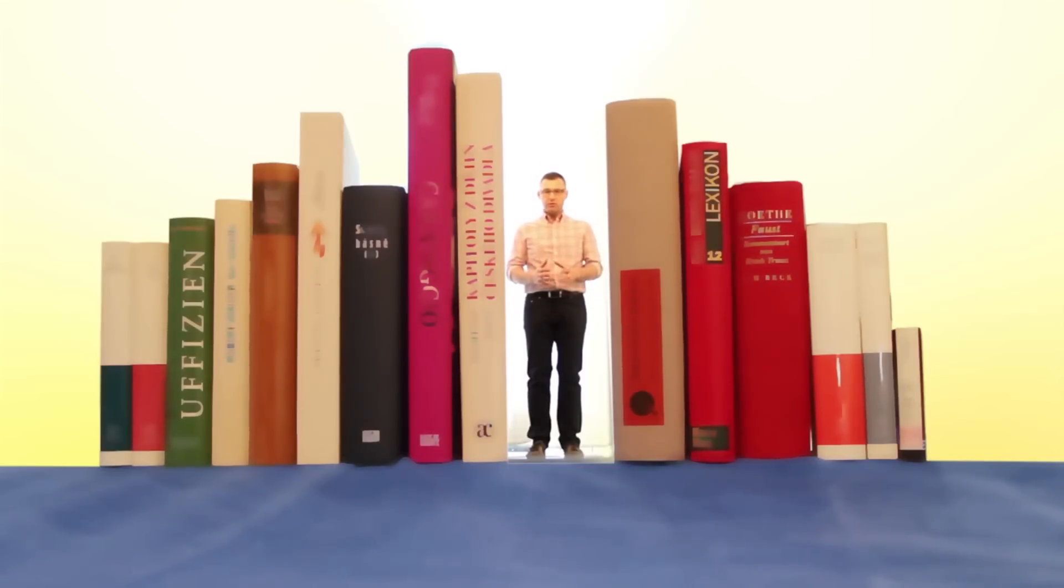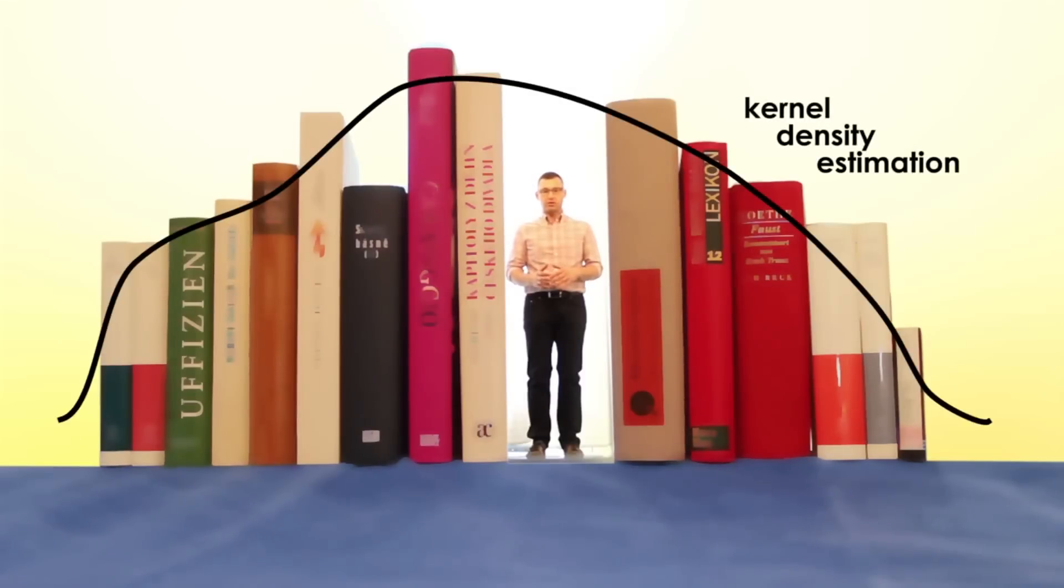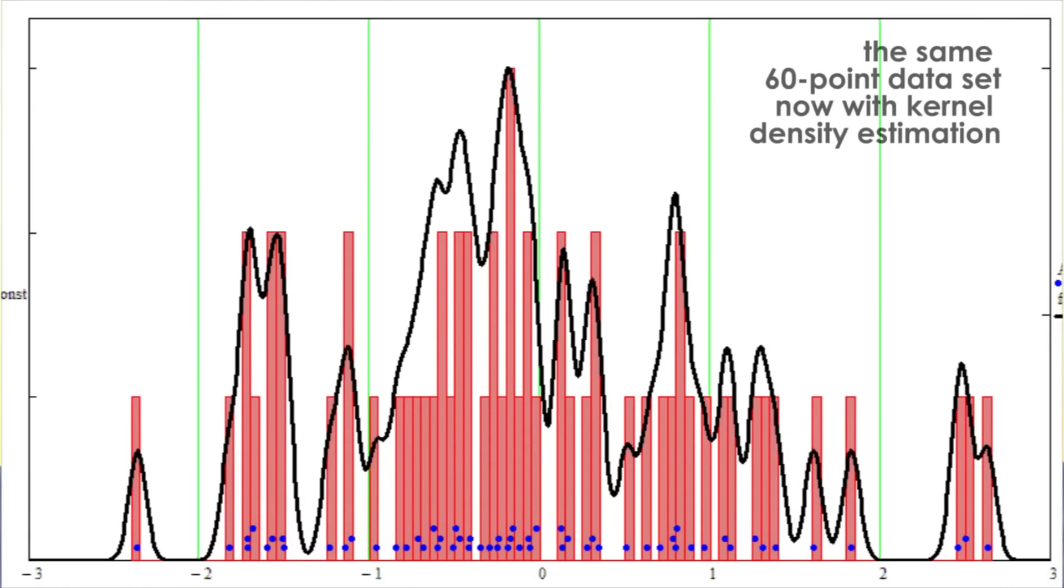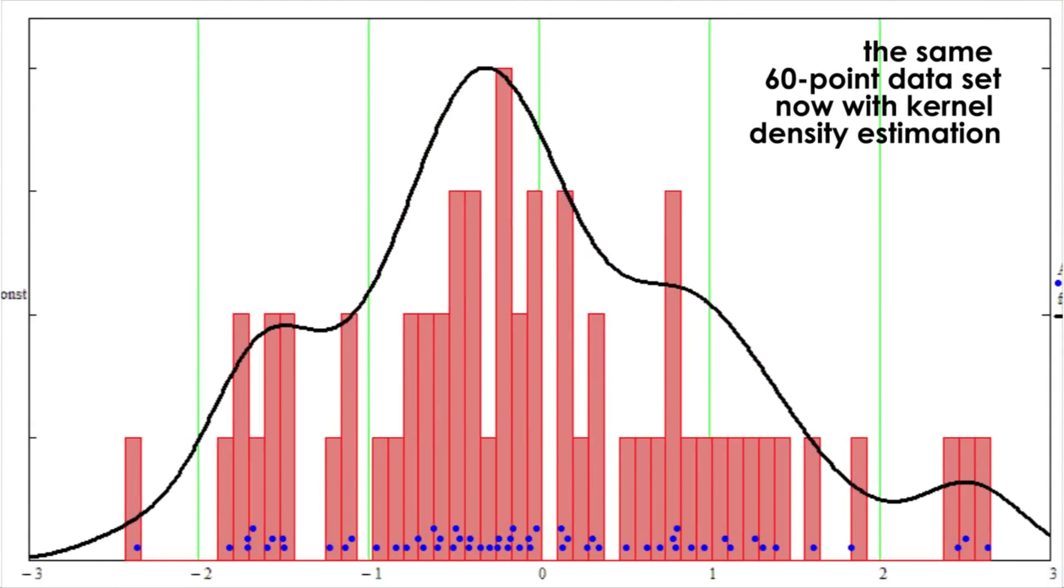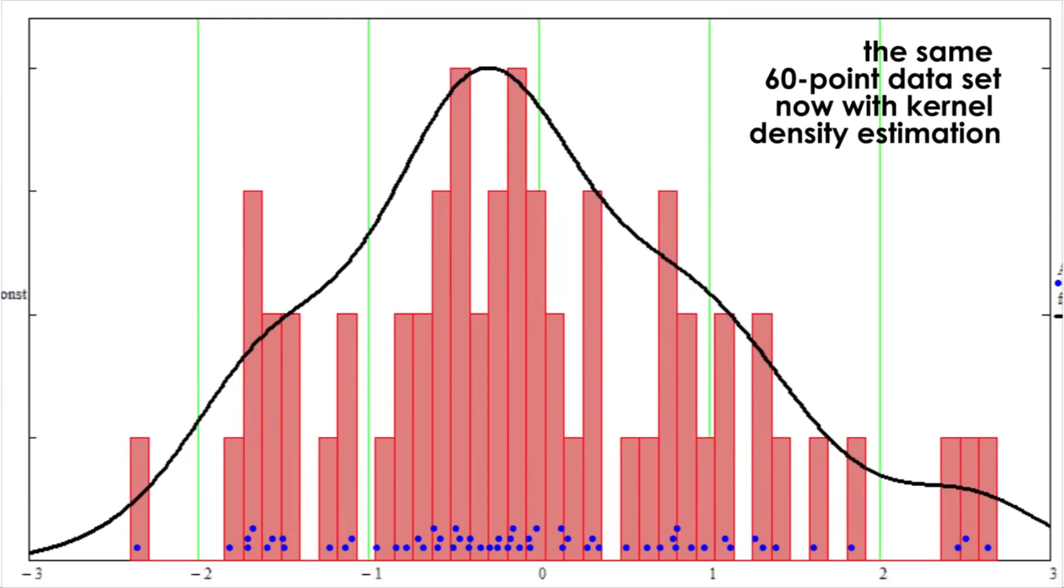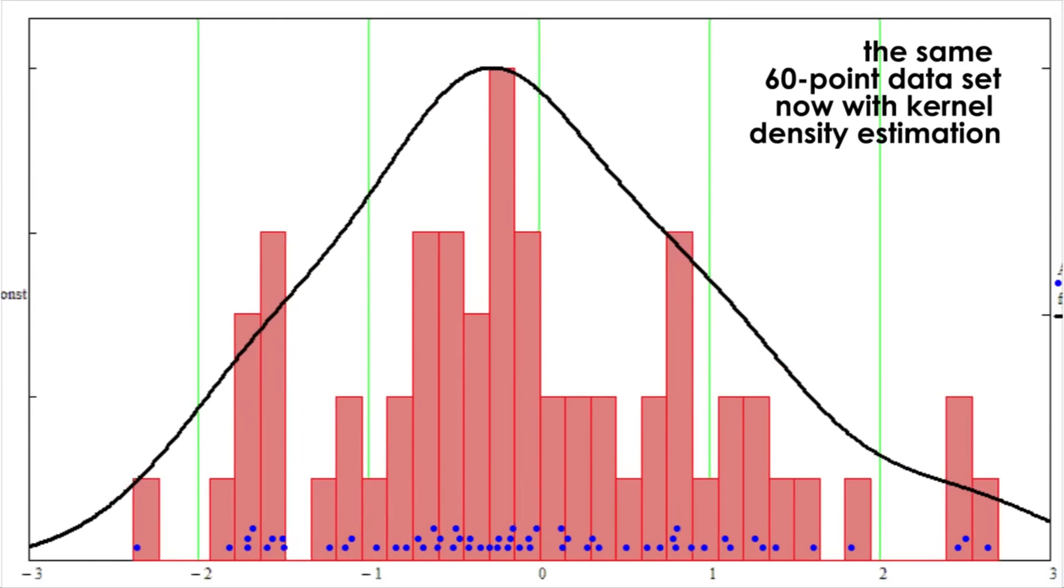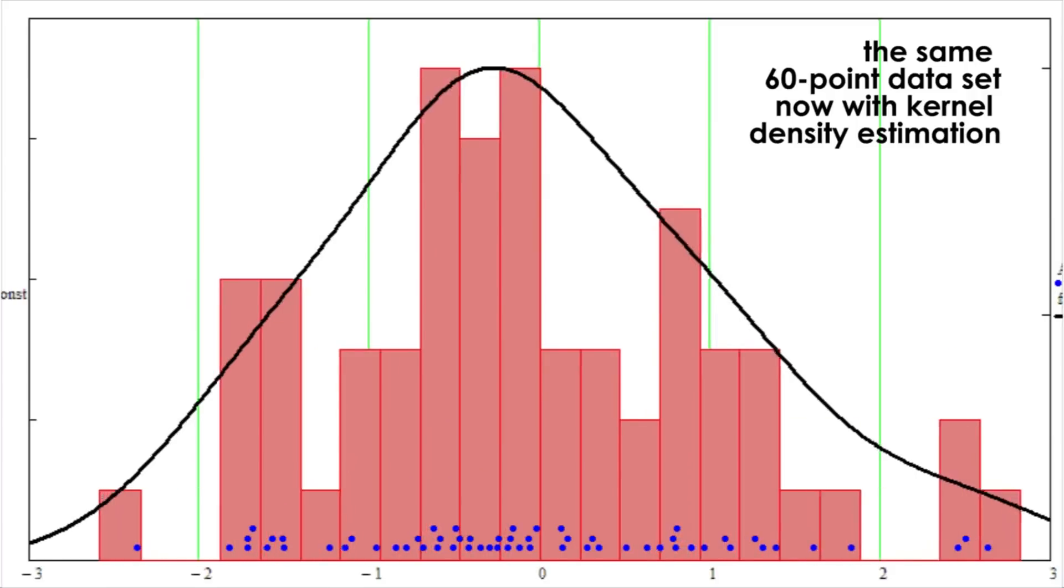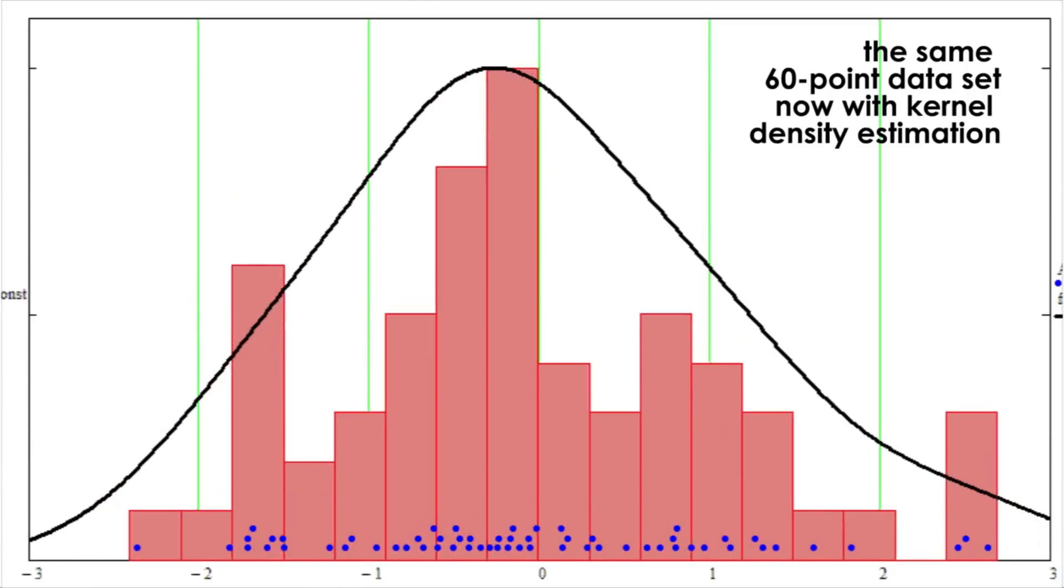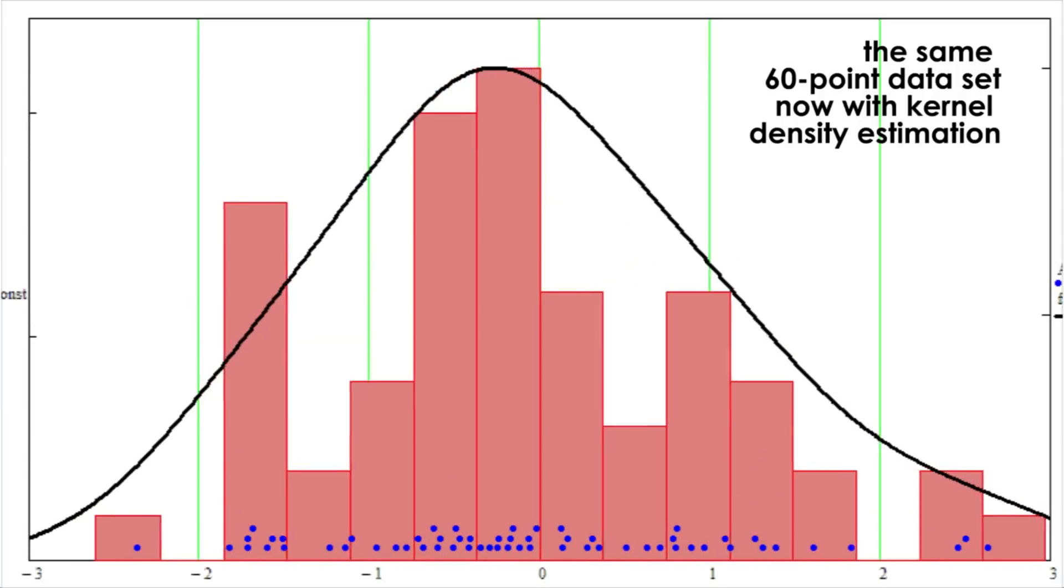One quite useful method is the kernel density estimation. It still requires some assumptions about the kernel shape and size, but it is notably less sensitive to assumptions compared to the histograms. The kernel density estimation produces a smooth probability density function, which more accurately reflects the distribution of the variable we have.